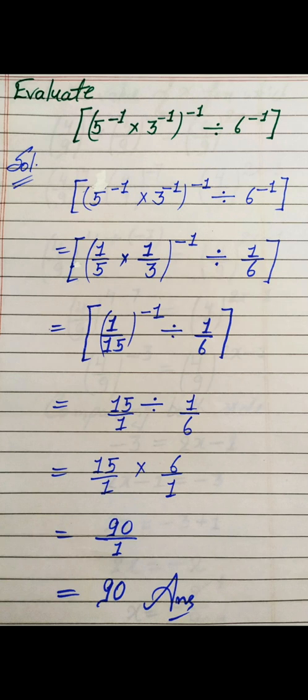There is again a negative power, so we take the reciprocal of the base. (1/15) becomes 15/1, and since the power is 1 there is no need to write it. So we have 15 divided by (1/6). Division converts to multiplication and we take the reciprocal of the second number: (1/6) becomes 6/1. Multiplying numerator by numerator and denominator by denominator: 15 × 6 = 90 and 1 × 1 = 1, giving 90 upon 1, which is 90 — our final answer.